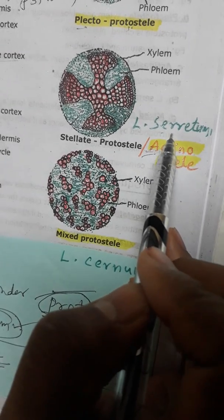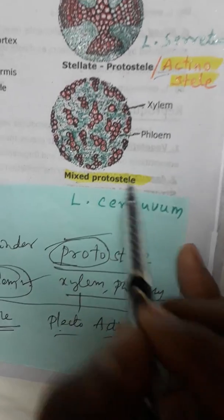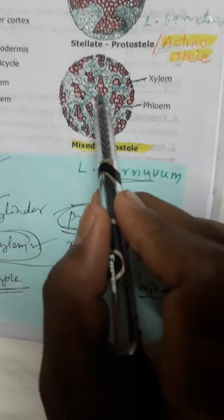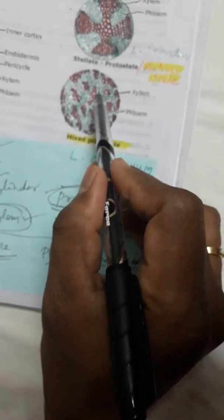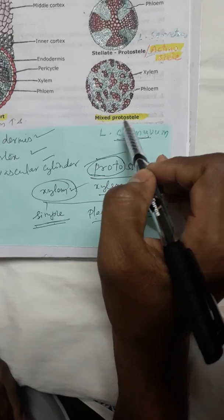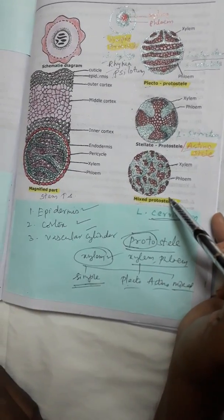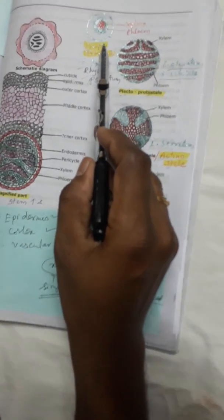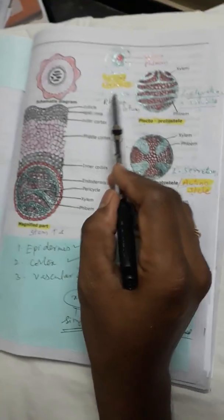The fourth type is mixed protostele. Example: Lycopodium cernuum. The tracheids and phloem are mixed — groups of tracheids are surrounded by phloem, and many such tracheid groups are present surrounded by phloem. This arrangement in groups is called mixed protostele. Out of the four types, mixed protostele is the most advanced and simple protostele is the most ancient. Simple protostele is present in Rhynia, Psilotum, and Lycopodium selago.